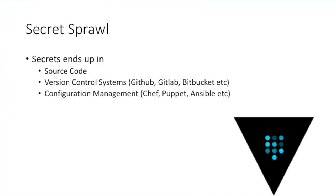In this world right now, what we're living in is something called secret sprawl. We have secrets that are basically in source code sometimes. They're in version control systems, in configuration management systems like GitHub or Bitbucket. Sometimes you see your secret for how to log in or use an API token in there. They might end up in your configuration management tools like Chef, Puppet, or Ansible to automate your environment, and you might have secrets inside that code too.